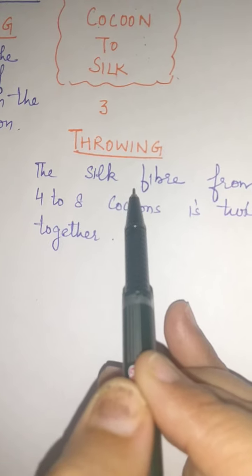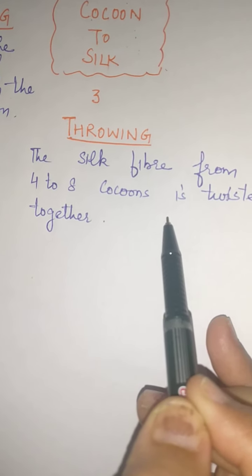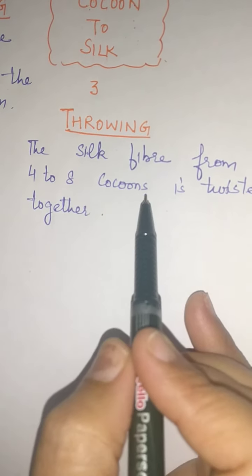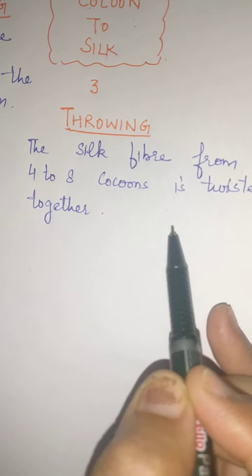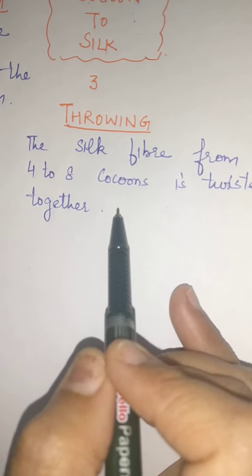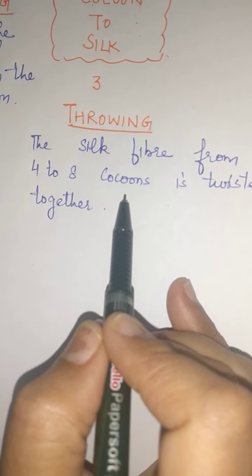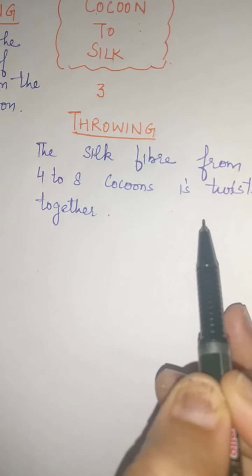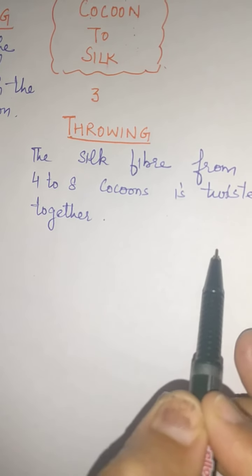Next is throwing. In this process, the silk fiber from 4 to 8 cocoons is twisted together. Why 4 to 8 cocoons? Because silk is a very delicate fiber. If we take just 1 cocoon, it will easily split. To avoid splitting of the fiber, we join 4 to 8 cocoons for twisting. After that, the resulting silk is woven into silk cloth.